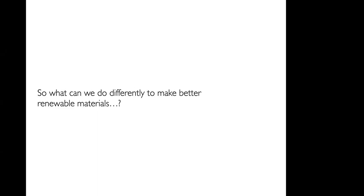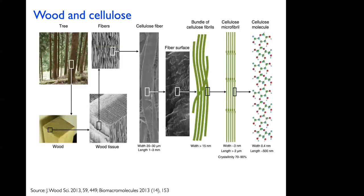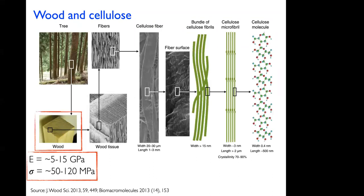So what can we do now that the concept of waste reinforced materials has been established? Let's go back to the drawing board and look at wood. Wood is a natural composite material made out of cellulose reinforced lignin, compatibilized by hemicellulose. As a structure, wood has a mechanical performance of 5 to 15 GPa in tensile modulus — the stiffness of the material — and a strength of 50 to 120 MPa, which refers to how much force the material can sustain before it fractures.